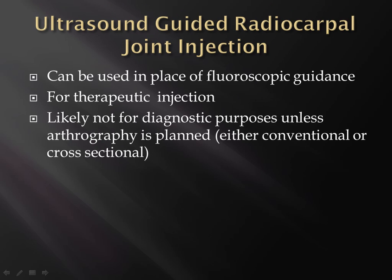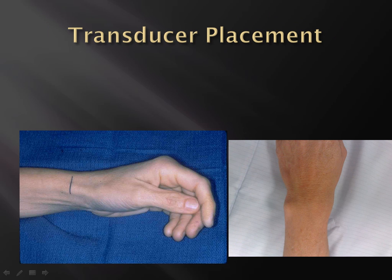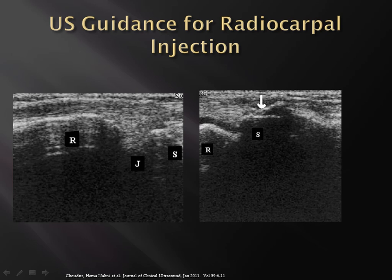Radiocarpal joint injection is just like you'd imagine — put the ultrasound transducer on the back of the wrist, and the footprint of the transducer shows you've got the radius, the scaphoid, and the joint. Remember that little dorsal ridge of the radius, and use an obliquely-oriented needle position to engage the joint, similar to an arthrogram approach.